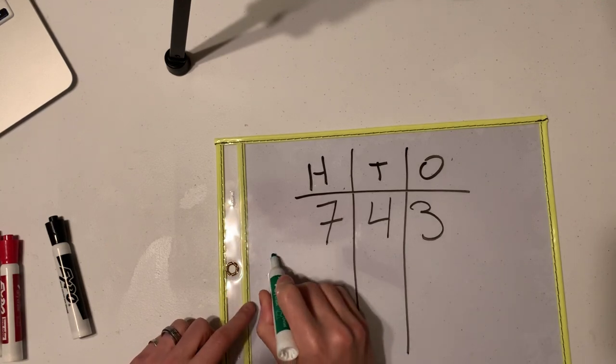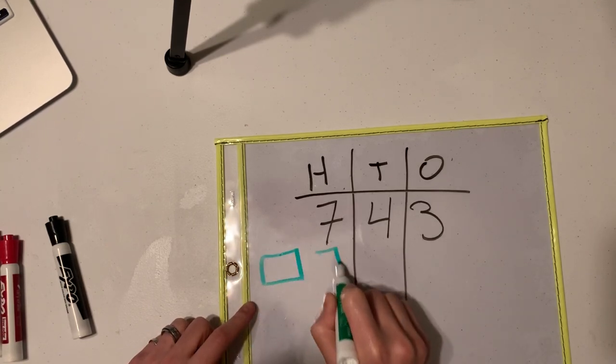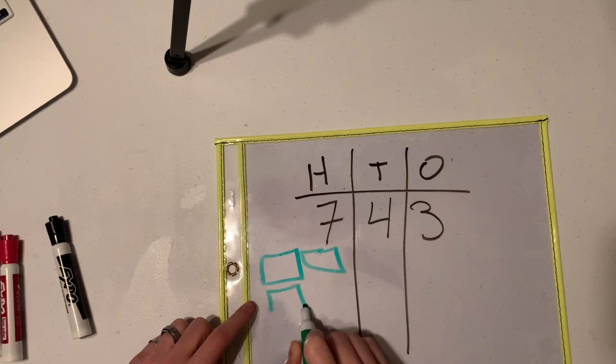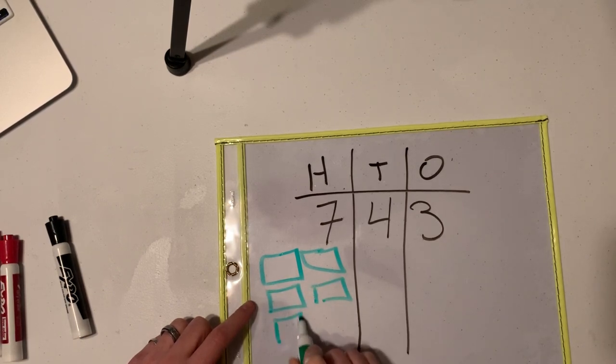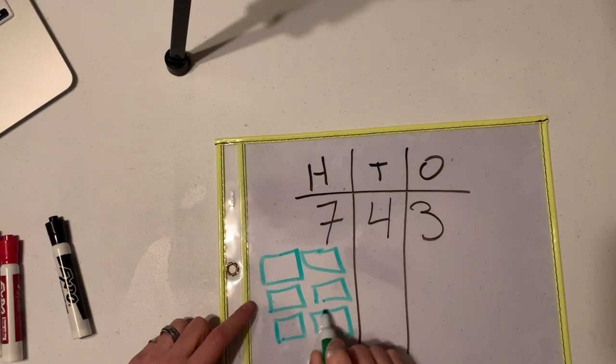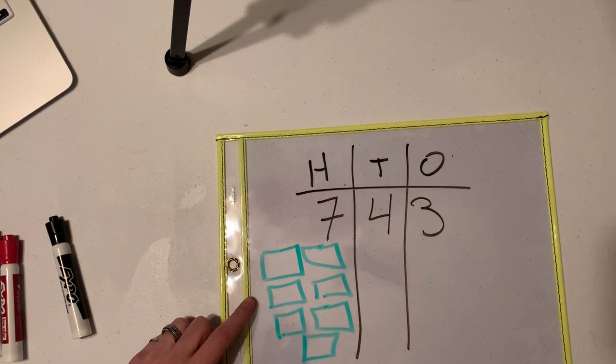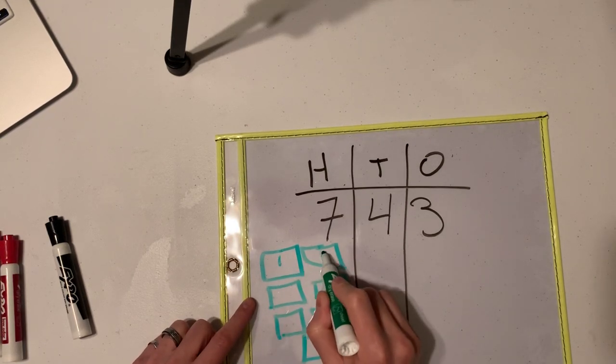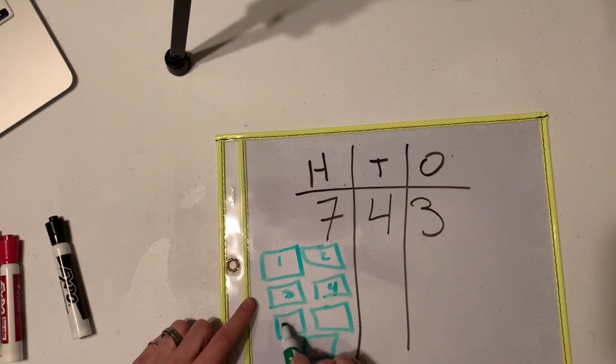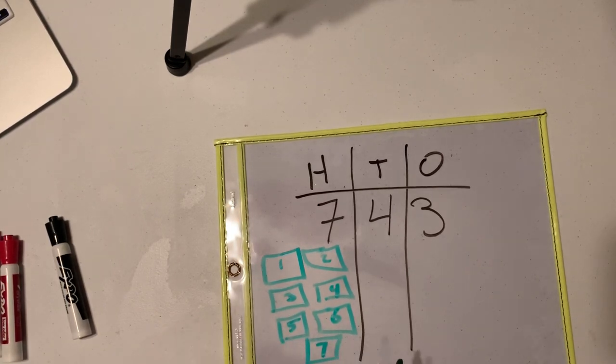So we're going to have one, two, three, four, five, six, and seven. I have one, two, three, four, five, six, seven. 700.